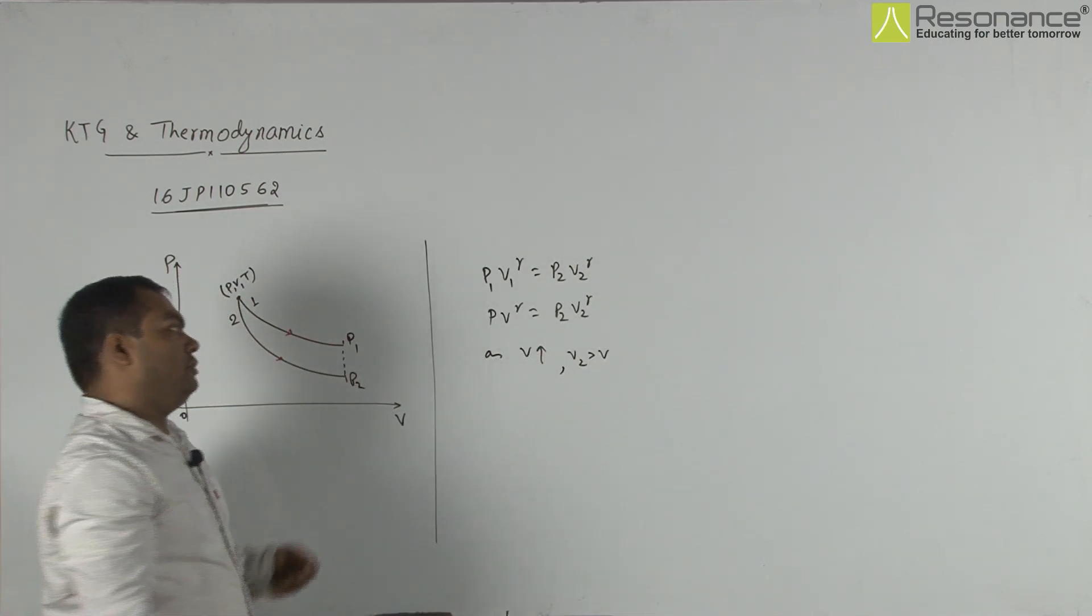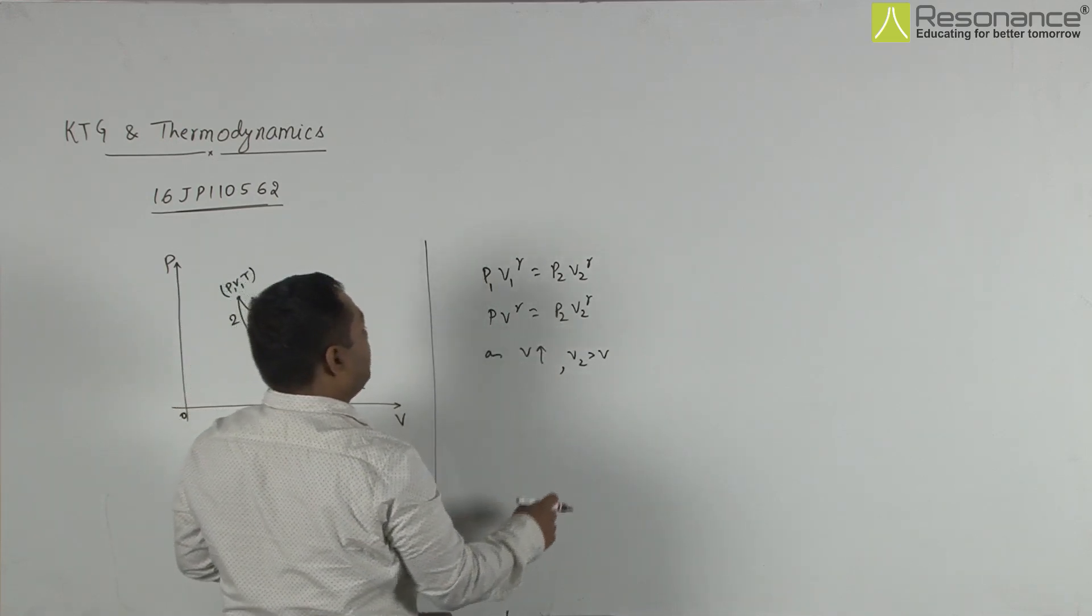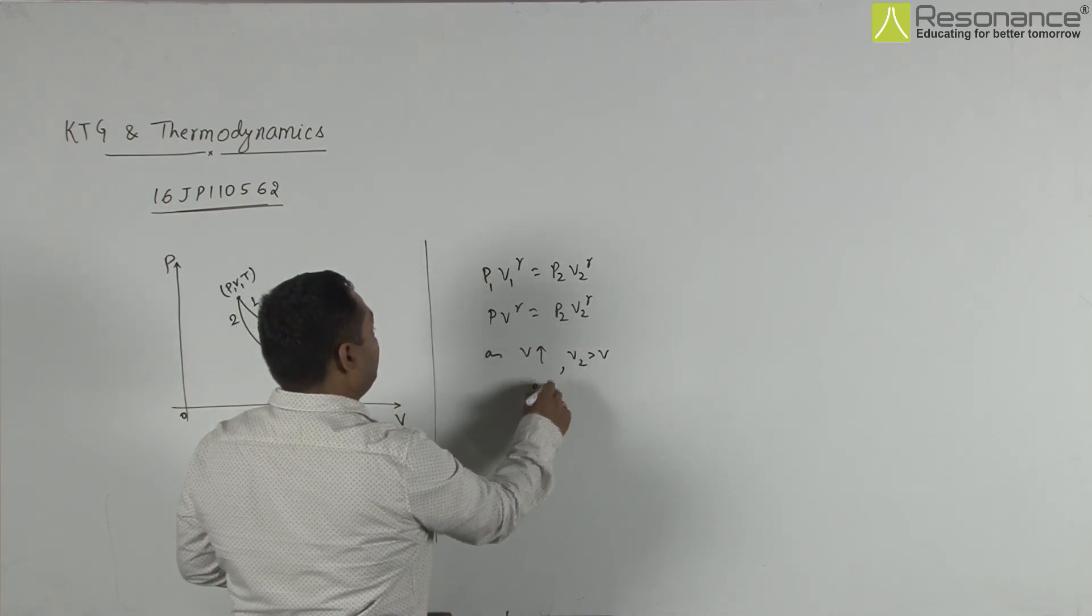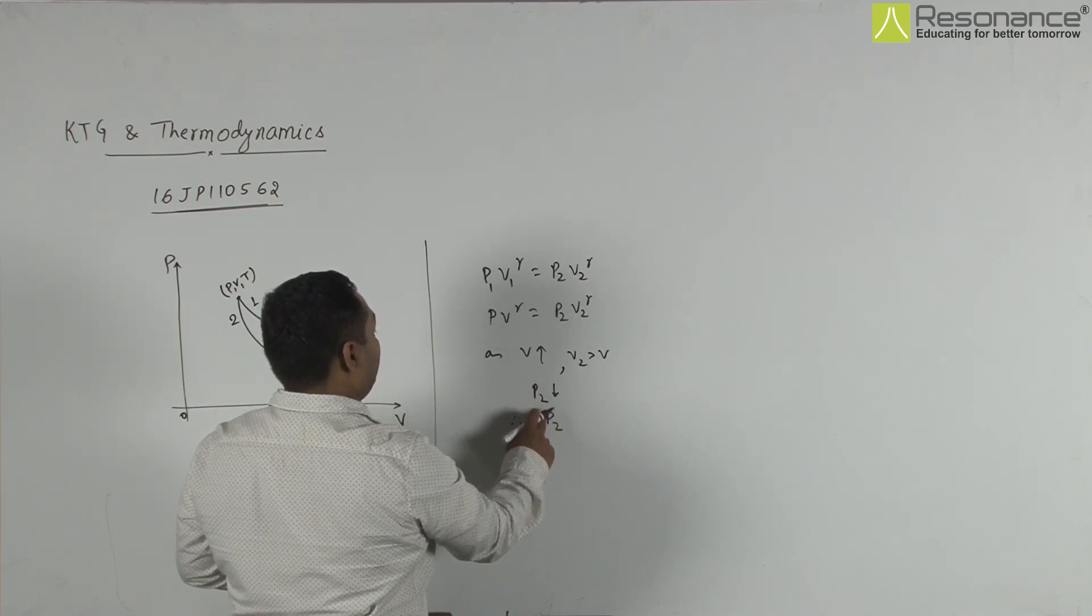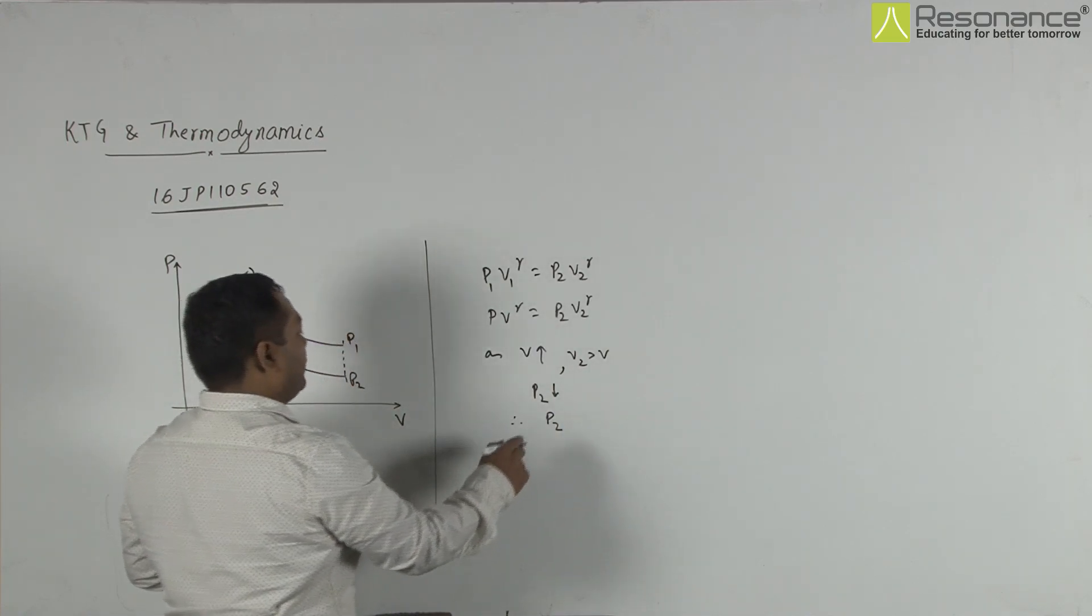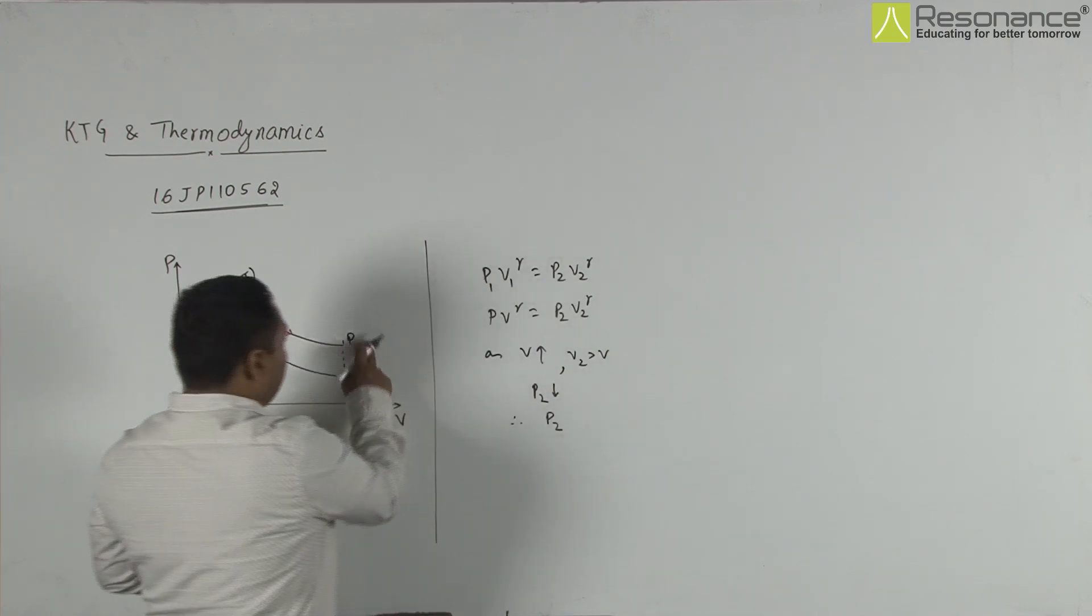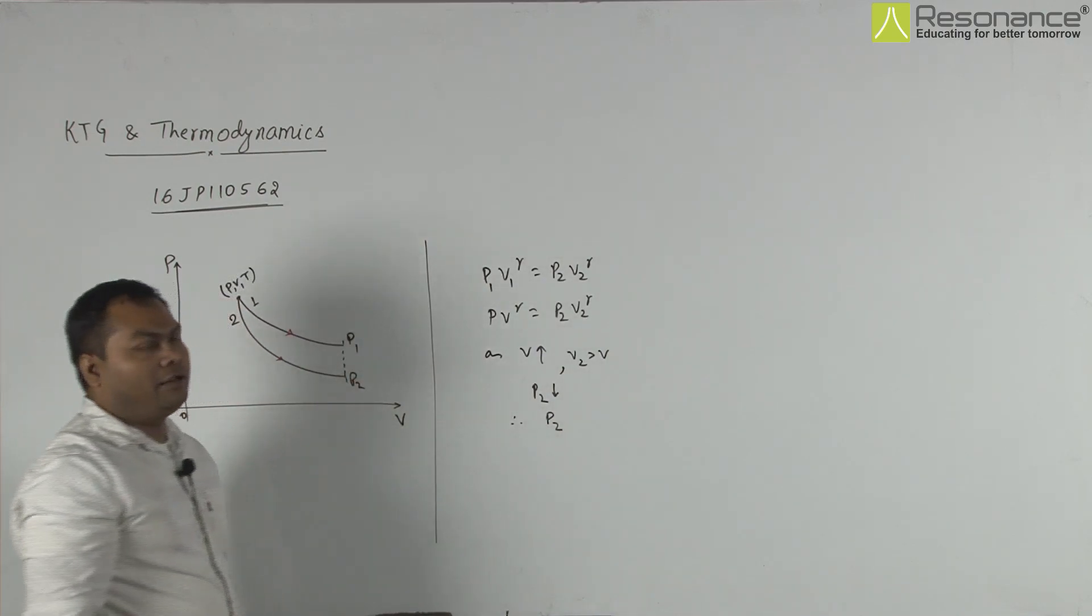Whenever volume increases, pressure gets down. So P2 gets down. Therefore, P2 must be lesser than P1.